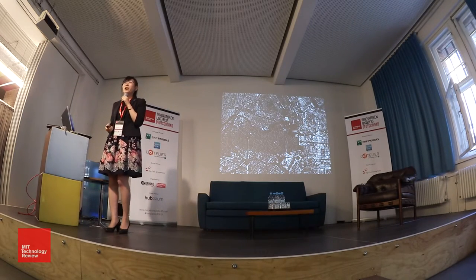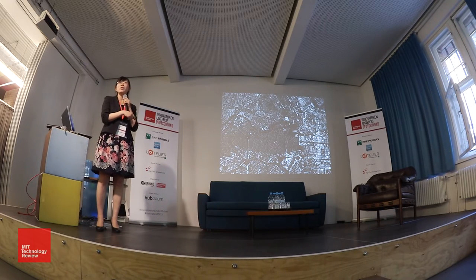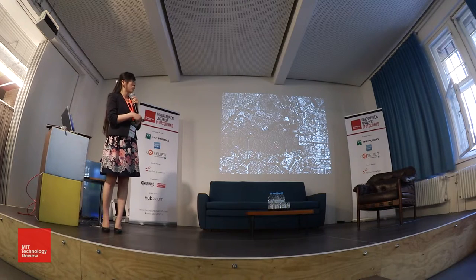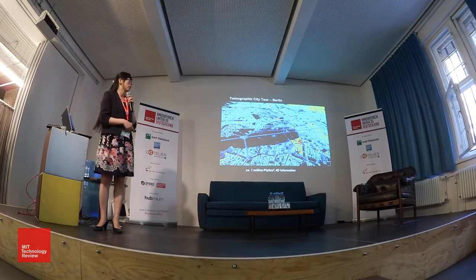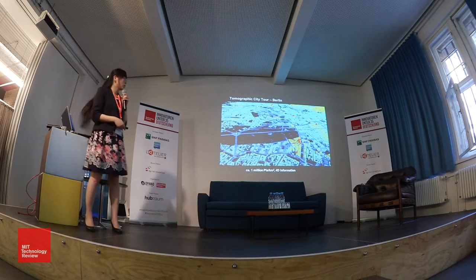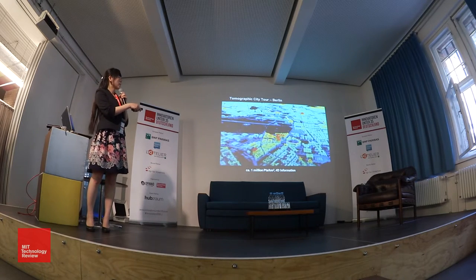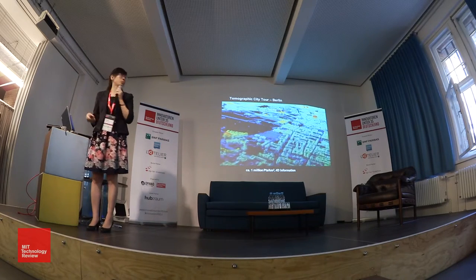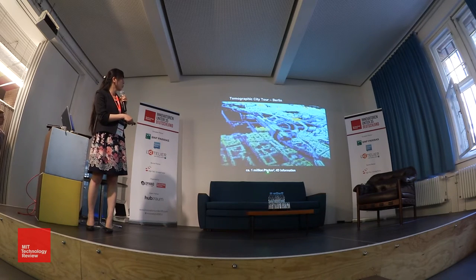Since we are in Berlin today, I should show some examples. This is the radar image of Berlin — with a single image it's very difficult to interpret, but with tens of images and the algorithms I have developed, this is what we are now achieving. Here is a Berlin tour: Potsdamer Platz, the Reichstag, and the Berlin Railway Station. We are now achieving a density of 1 million points per square kilometer.